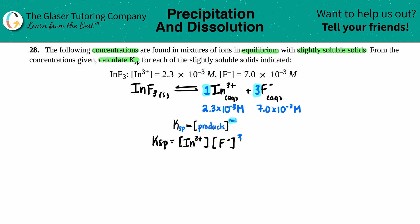The indium was 2.3 × 10⁻³ and the fluorine is 7.0 × 10⁻³. So let's just plug in the values: Ksp equals 2.3 × 10⁻³ and that has to be cubed.